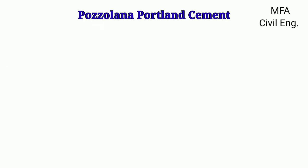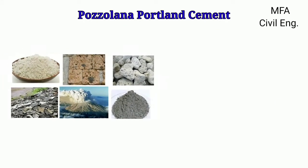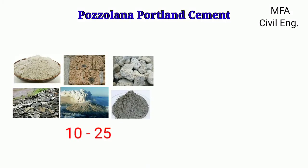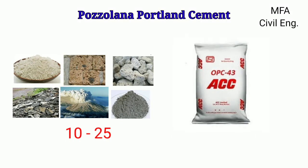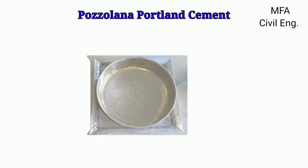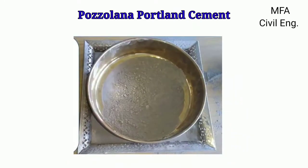The constituent of pozzolana must be within 10 to 25 percent, and the mixing of the pozzolana component and the ordinary Portland cement should be very thorough. The fineness through a 90 micron sieve should not be more than 5 percent residue.